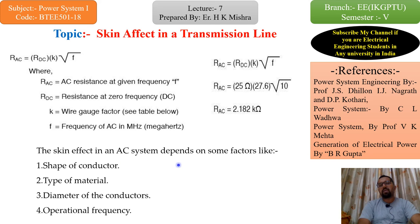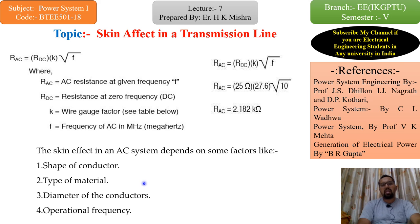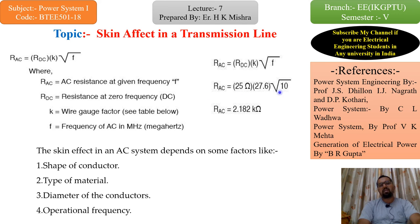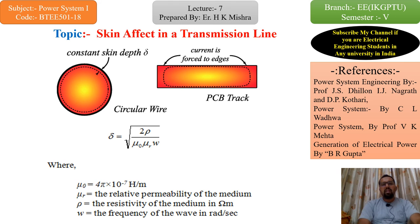The skin effect in an AC system depends on some factors like shape of conductor, type of material, diameter of the conductor, and operational frequency. अगर frequency ज्यादा होगी, skin effect भी ज्यादा होगी. Diameter of conductor ज्यादा होगा तो भी ज्यादा होगा. Type of material — किस type की material हम लोग use कर रहे हैं, and shape of conductor — conductor का shape और design — इन सब पर skin effect depend करता है. कभी कभी आप से पूछा जाएगा — what is delta?